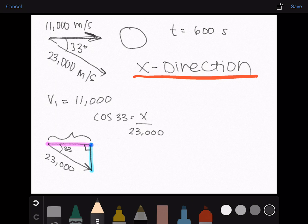And then solving for x or v2, we will get 19,289. And then we use the equation, v1 plus at equals v2.